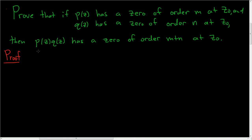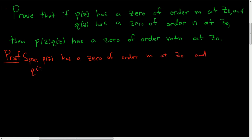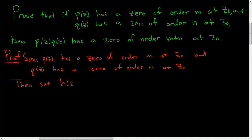Proof. Suppose P of Z has a zero of order M at Z naught and Q of Z has a zero of order N at Z naught. The natural thing to do is look at the product. So set H of Z equal to P of Z times Q of Z.